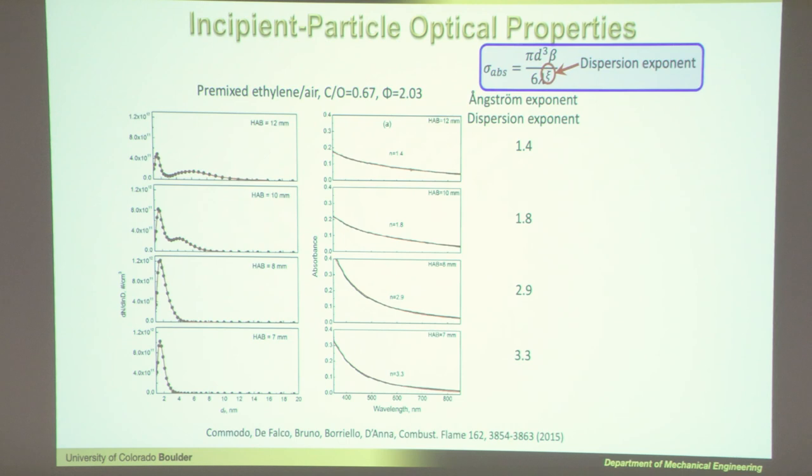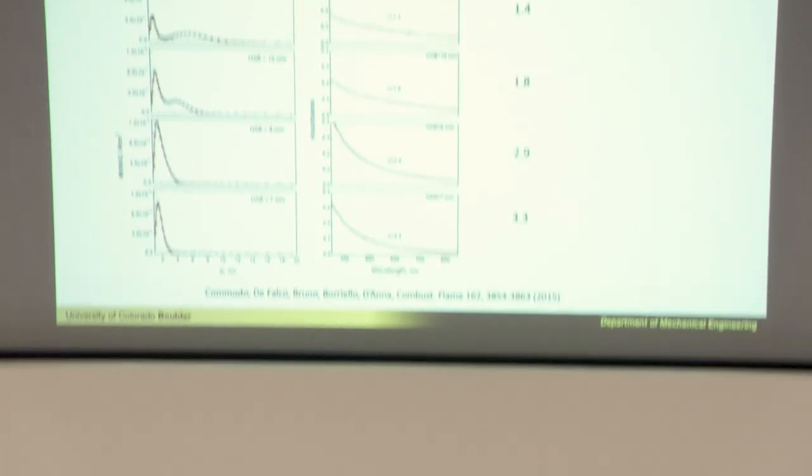When soot is actually pretty mature — almost fully mature — it has an Angstrom exponent or dispersion exponent close to one. It's almost always very close to one. I've measured it less than one, and other people have measured it less than one when you get it really mature — on the very edge of a diffusion flame you can see it's less than one. But you can generally think of it: if someone asks you what the dispersion exponent is for mature soot, just say one.